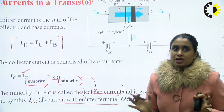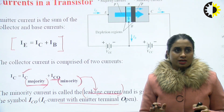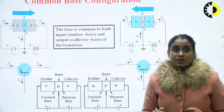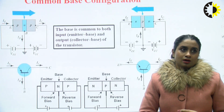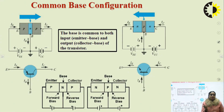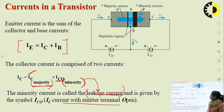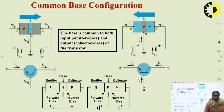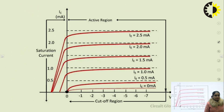This is the basic configuration of how a BJT operates. There are different configurations of BJTs: we can keep the base common, the emitter common, or the collector common, and analyze how current and voltage relations work. There are three configurations — common base, common emitter, and common collector — which will be taken up in the next lecture.